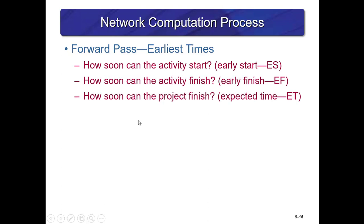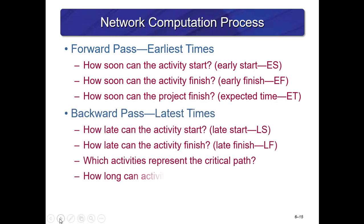For network computation, we complete a forward pass — going from start to finish — to determine the earliest times: ES is early start (how soon can the activity start), EF is early finish (how soon can the activity finish), and ET is how soon the project can finish. The backward pass starts at the project finish and works backwards to the left to determine: late start (how late can the activity start), late finish (how late can the activity finish), which activities are on the critical path, and how long an activity can be delayed — which is the slack or float.